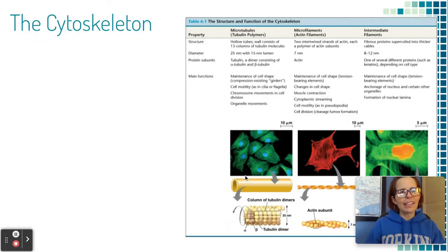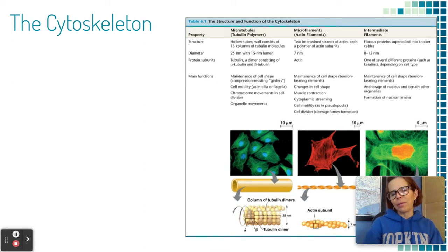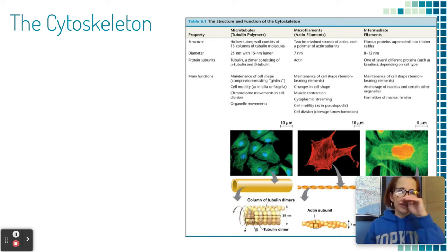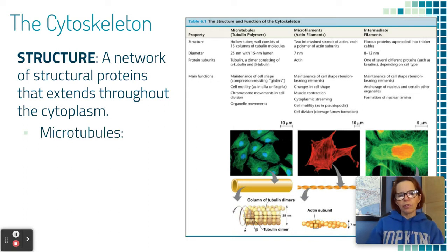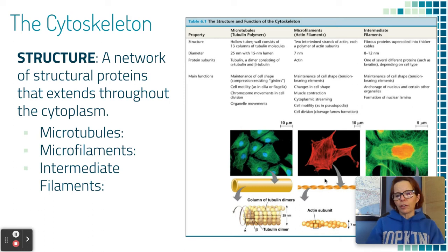Let's go ahead and talk about the cytoskeleton. AP doesn't say a whole lot about how much you need to know about it, but you definitely need to know everything about the cell membrane. Let's do a quick overview of the cytoskeleton because it could come up in a test question. So what is the cytoskeleton? It's a network of proteins that extends throughout the cytoplasm, and there are three different types: microtubules, microfilaments, and intermediate filaments.